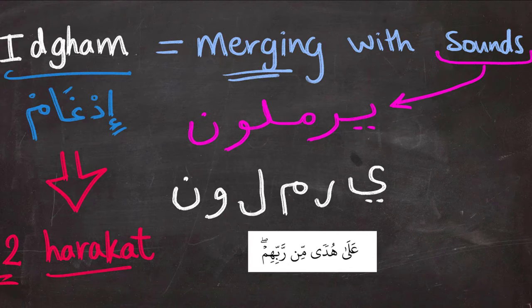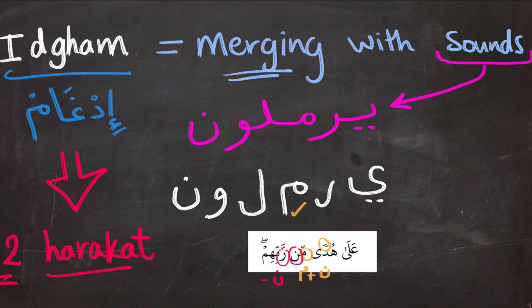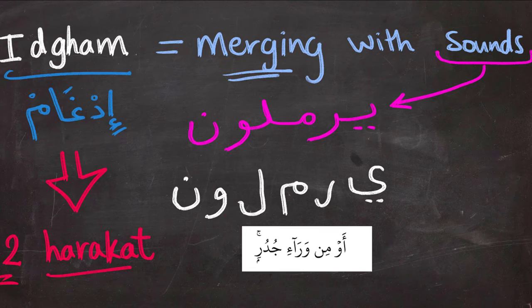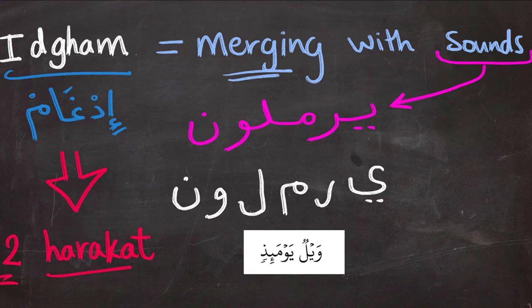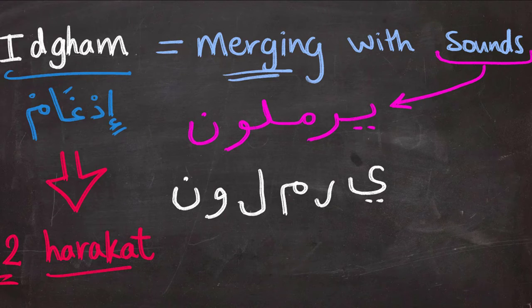For example, 'ala hudam min rabbihim' — we have two places for Idgham here. The first with the tanween of 'huda,' so we say 'hudam min,' merging them together. The second position is between 'min' and 'rabbihim,' and we say 'mir-rabbihim.' Another example: 'aw min wara'i judurin' — here the Nun in 'min' is fused with the Waw, giving 'mim-wara'i.' And 'waylulyawma idh' — the tanween of 'wayl' is merged with the Ya in 'yawma idh.'